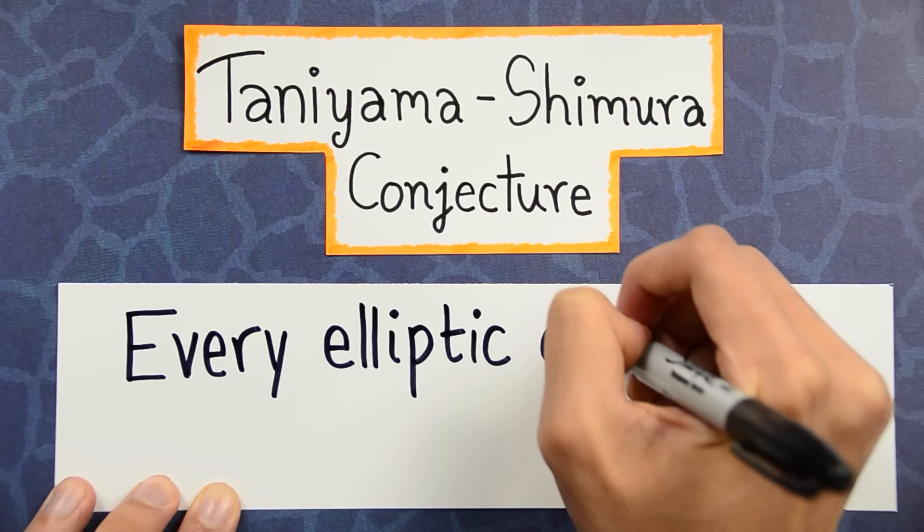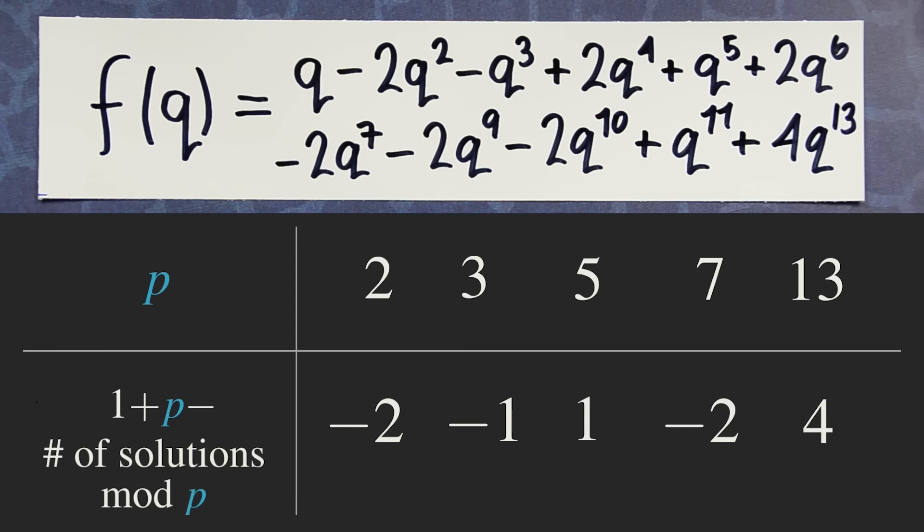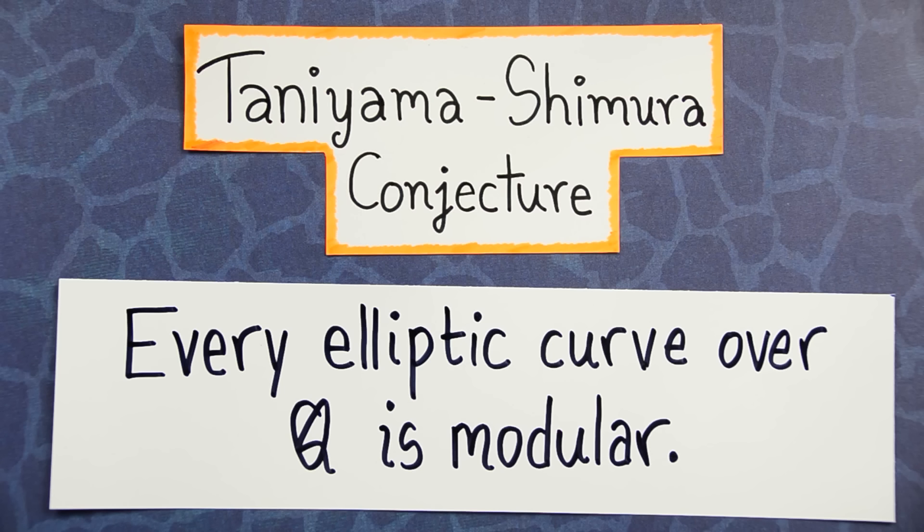Every elliptic curve over Q is modular. That is, for every elliptic curve over Q, there is a modular form whose coefficients are essentially the number of solutions mod p to this elliptic curve.